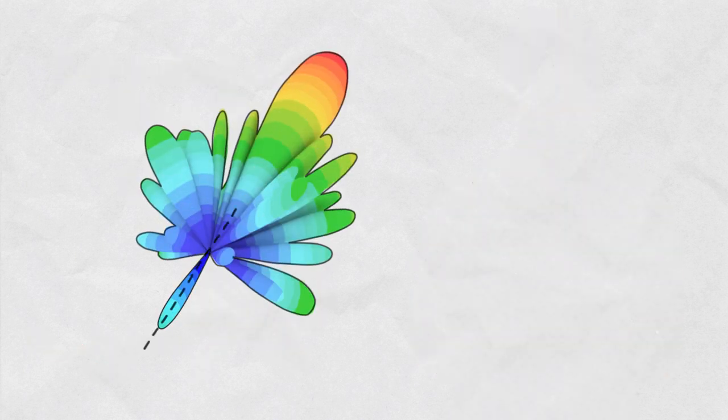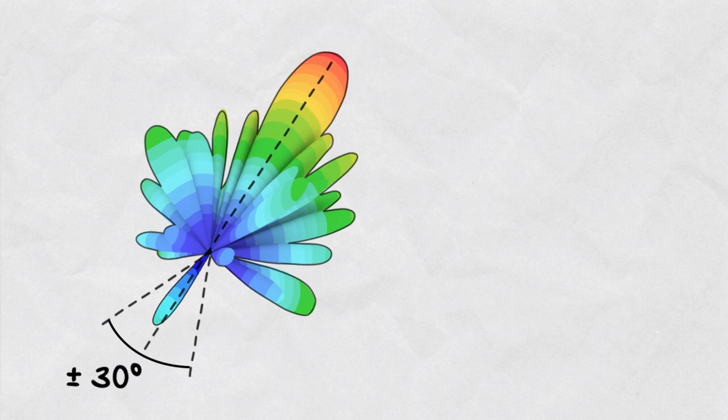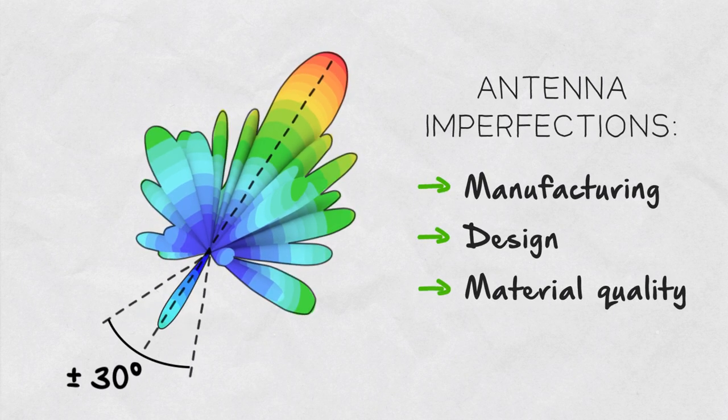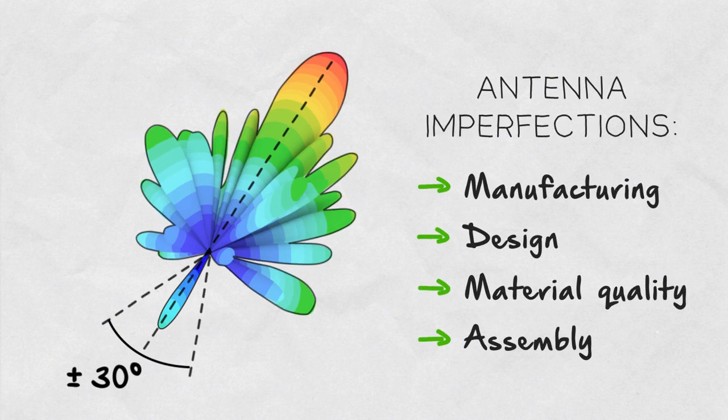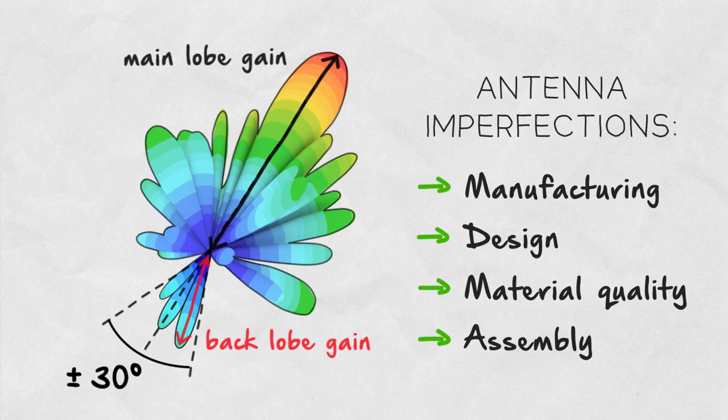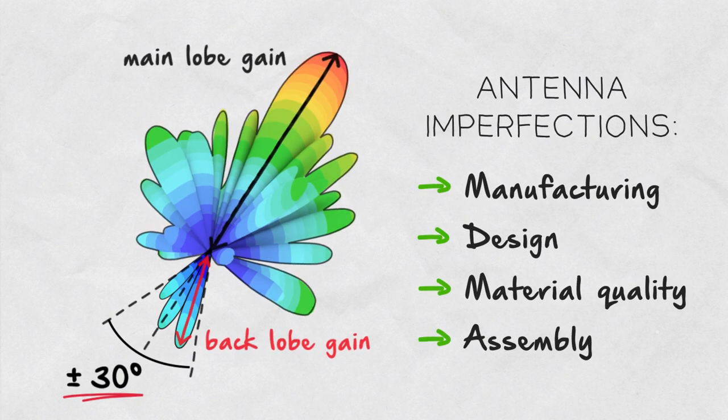In practical life, the back lobe doesn't necessarily point exactly backwards because of manufacturing and design imperfections. Therefore, the front-to-back ratio is often defined as the gain of the main lobe minus the gain of the strongest side lobe within a plus or minus 30 degree angle around the backward direction.